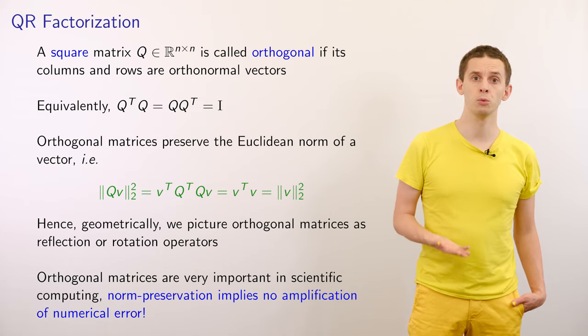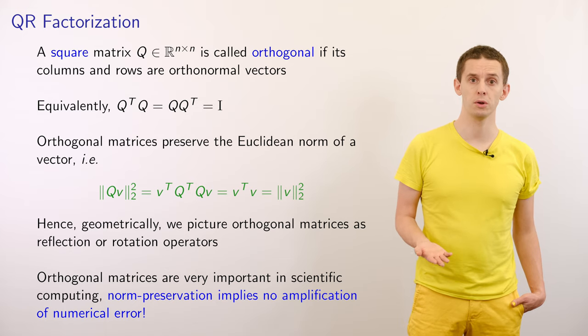Similarly, by looking at the rows of our matrix Q, we can deduce that Q times Q transpose is also equal to the identity.